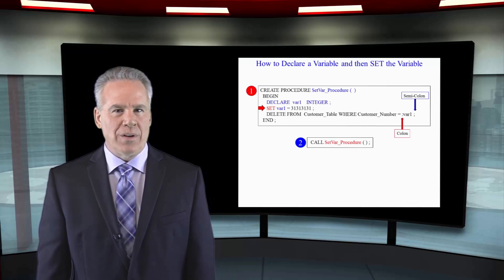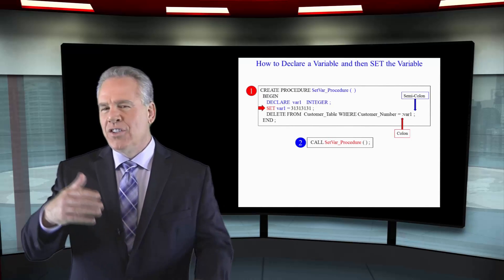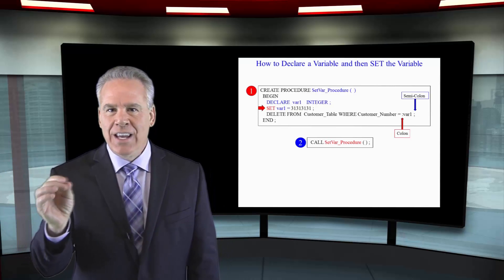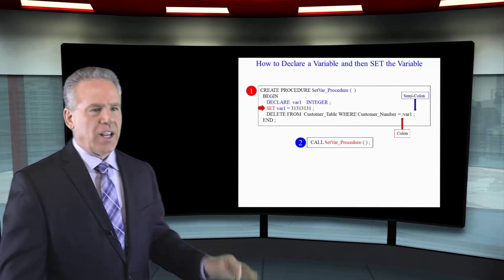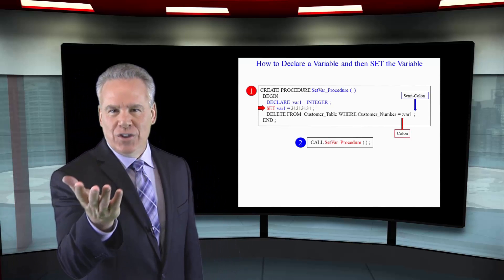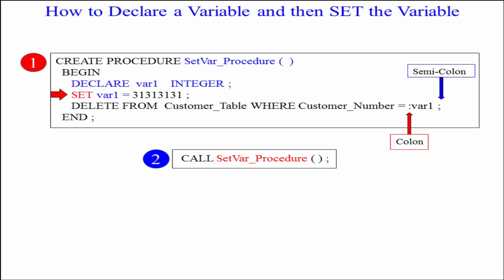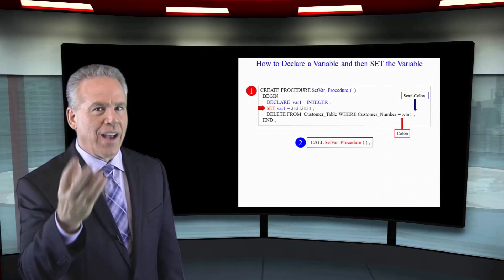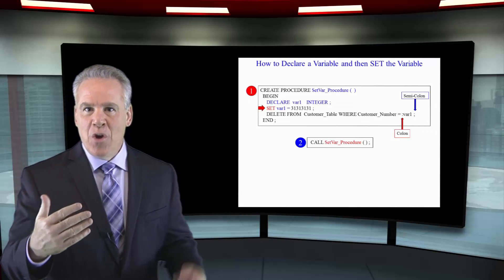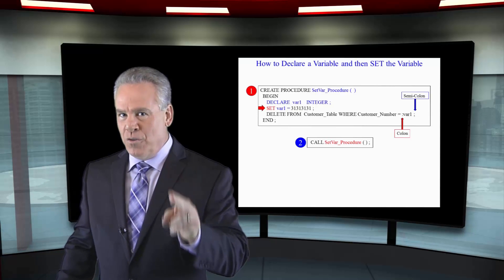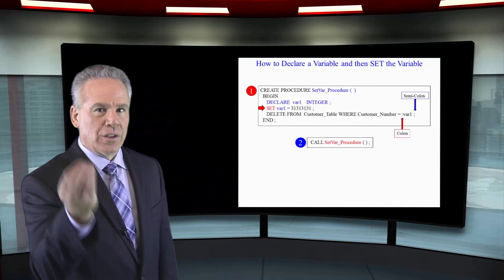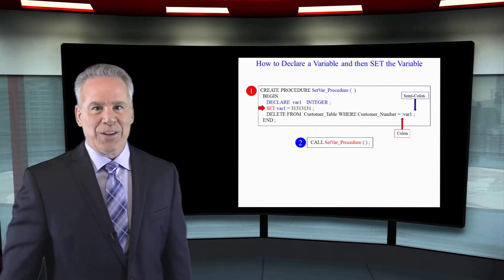This will also be important — I don't want you to just declare a variable, set a default, and have that be the only value it ever has. Here we're going to do a little different technique. We create our procedure, begin and end, and I say declare 'var1' as an integer. Now I can come back and say set var1 equal to 31313131 semicolon — and that's the customer number I've set it to. There will be times when you will actually have to change a variable or set it, or add one to it for a loop. So make sure that you take this with you — learn how to set a variable and you're in good shape.